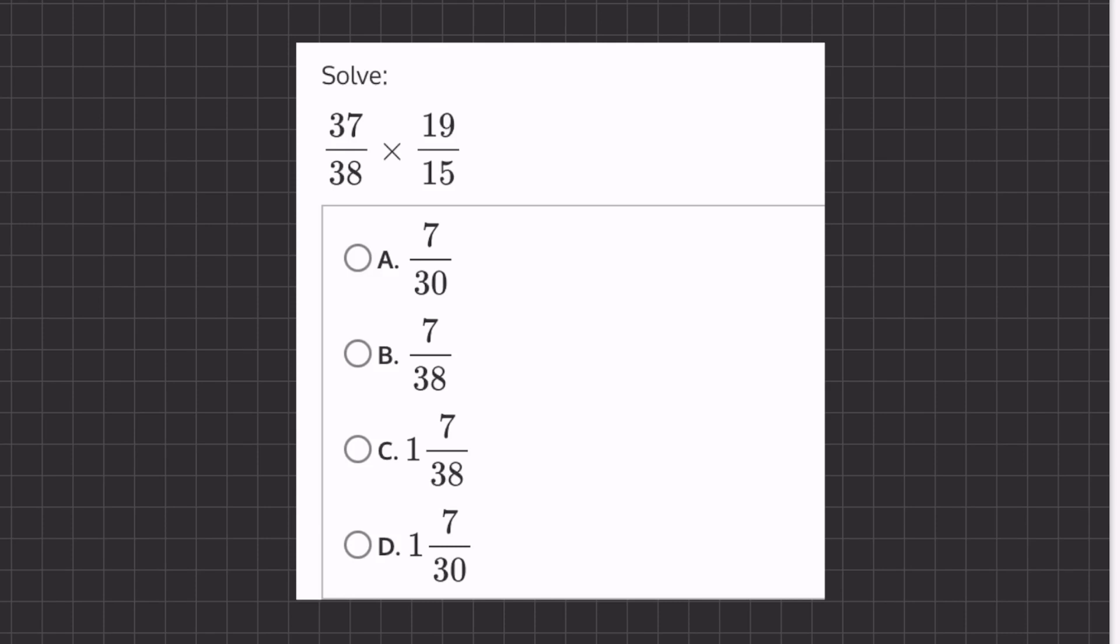Alright, so in this problem we are multiplying two fractions together. Now, before we start multiplying, we can use the commutative property of multiplication to simplify this problem to make it easier for us to solve.